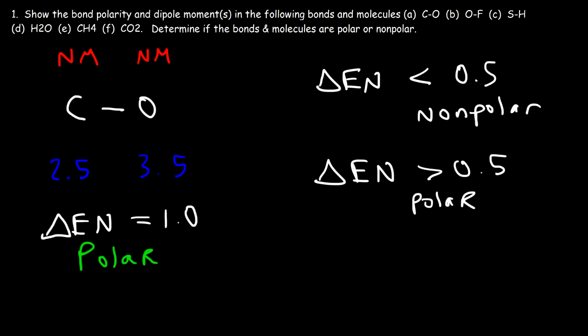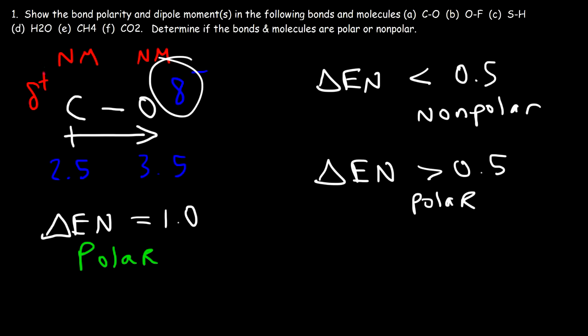Now that we know oxygen is more electronegative than carbon, we can indicate the bond polarity: oxygen has a partial negative charge, and carbon has a partial positive charge. To draw the dipole moment, you draw an arrow that starts from the positive part of the molecule and points towards the negative part. This represents the bond polarity. Whenever you have a net dipole moment, the molecule as a whole is polar. If all dipole moments cancel, the molecule is nonpolar.